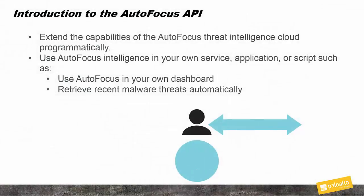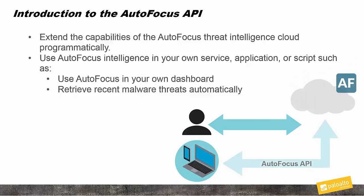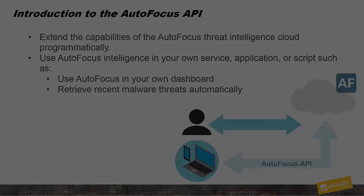The Autofocus API allows you to programmatically extend the capabilities of the Autofocus Threat Intelligence Cloud. While the Autofocus portal allows you to sift through a vast amount of threat intelligence, the Autofocus API lets you extend this power to your own service, application, or script. For example, you may want to include threat intelligence data on your own dashboard or automatically gather the most recent malware threats seen on your network.